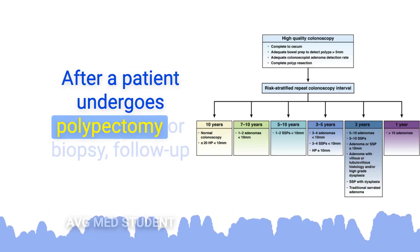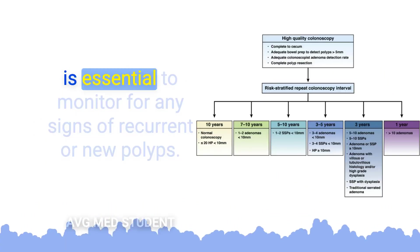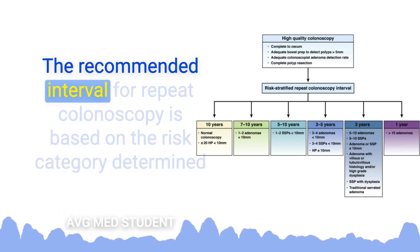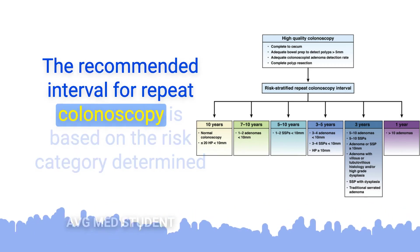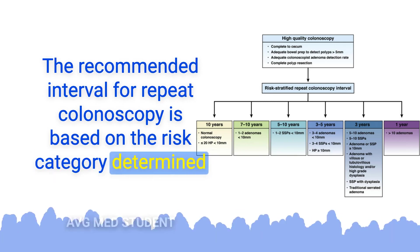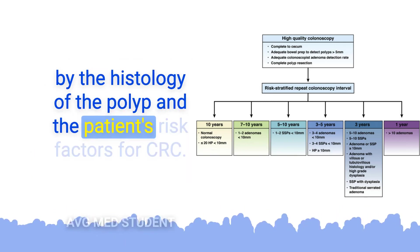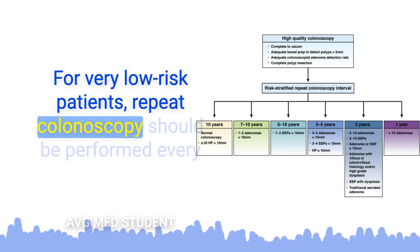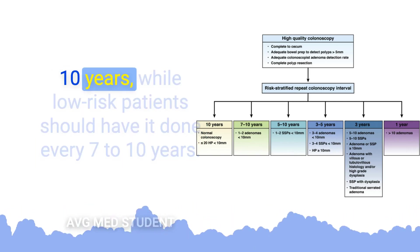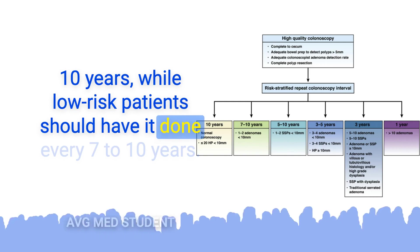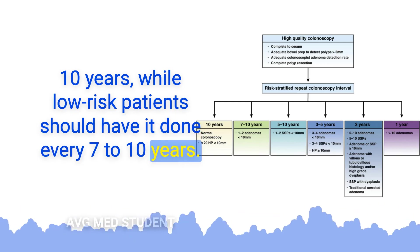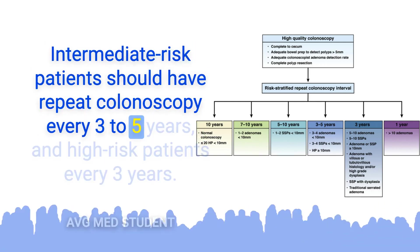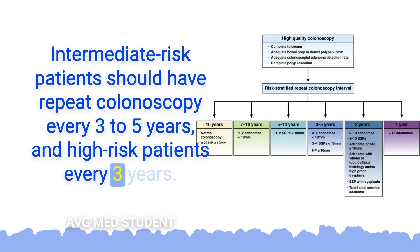After a patient undergoes polypectomy or biopsy, follow-up is essential to monitor for any signs of recurrent or new polyps. The recommended interval for repeat colonoscopy is based on the risk category determined by the histology of the polyp and the patient's risk factors for CRC. For very low-risk patients, repeat colonoscopy should be performed every 10 years, while low-risk patients should have it done every 7 to 10 years. Intermediate-risk patients should have repeat colonoscopy every 3 to 5 years, and high-risk patients every 3 years.